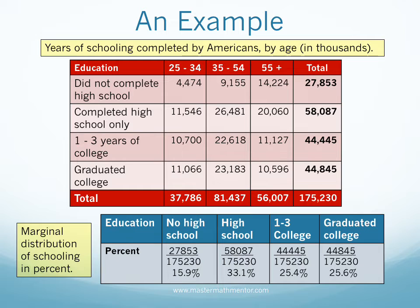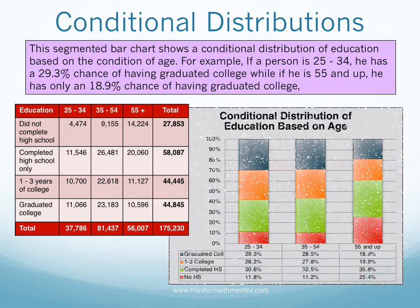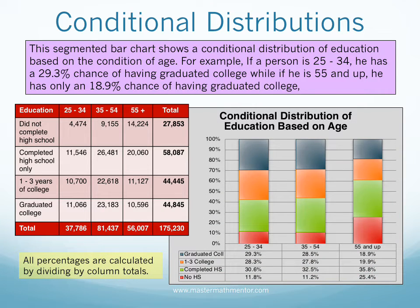We now compute the marginal distribution of schooling in terms of percent. We divide our population into our four educational groups and divide each row total by 175,230. It should be clear that the largest category is completing high school only, at about 33 percent. We could also create a marginal distribution table of age in terms of percent, with each column total divided by our grand total of 175,230. We now illustrate our data with a conditional distribution of education based on the condition of age. A segmented bar chart is used — there are three bars, one for each age group, each divided into four segments for the schooling category. Our percentages take the joint distributions (the cell totals) and divide them by the column totals.